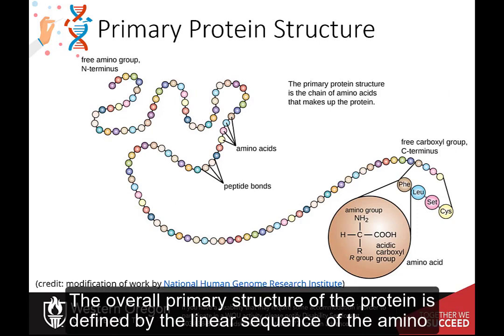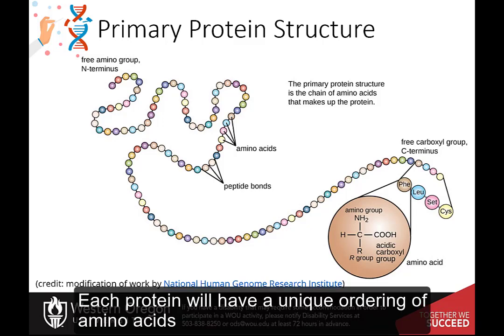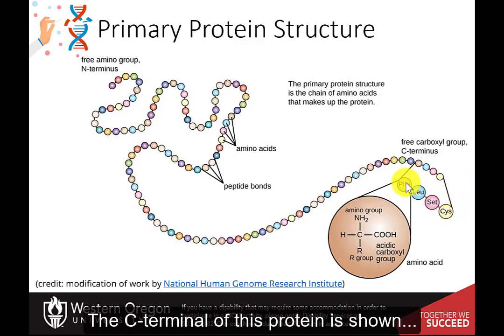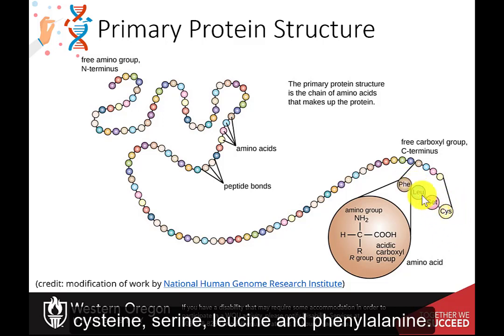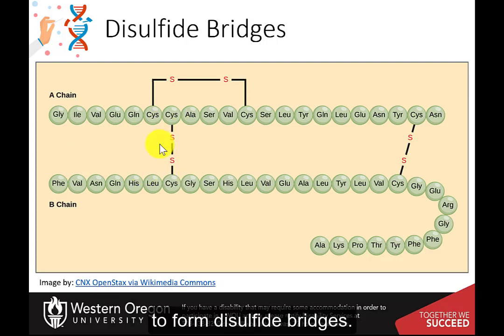The overall primary structure of the protein is defined by the linear sequence of the amino acids put together in the N to C orientation. Each protein will have a unique ordering of amino acids, creating hundreds of thousands of possibilities. The C terminal of this protein is shown: cysteine, serine, leucine, and phenylalanine. As noted previously, cysteine residues are capable of being oxidized to form disulfide bridges.